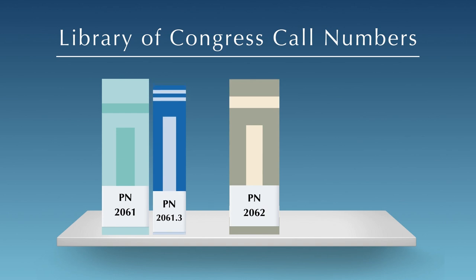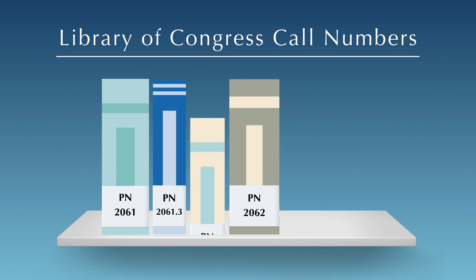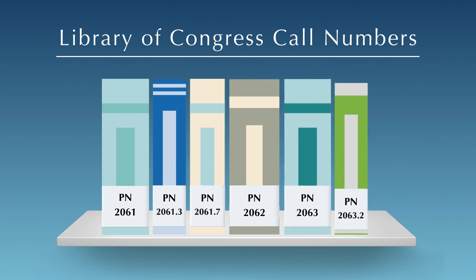For example, PN 2061 comes before PN 2061.3, which comes before PN 2061.7, then PN 2062, and so on.